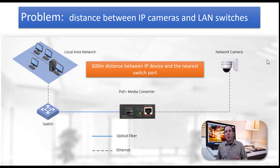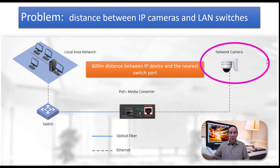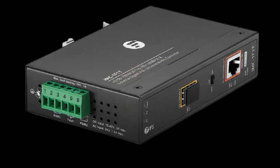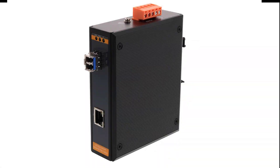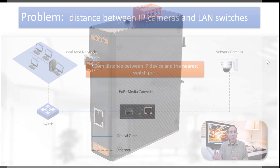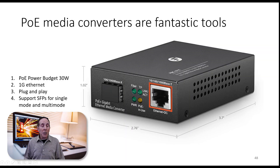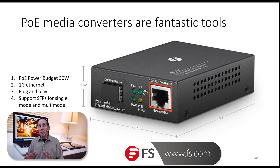Whenever you're faced with a distance problem with networks — especially when you have an IP camera being put 600 meters away from your nearest switchboard — things like media converters can really be handy, especially if it's one or two items you have to connect. PoE media converters are super handy because many IP cameras can be powered by a single network cable. If you're going to use media converters to extend your LAN, choose them very wisely.